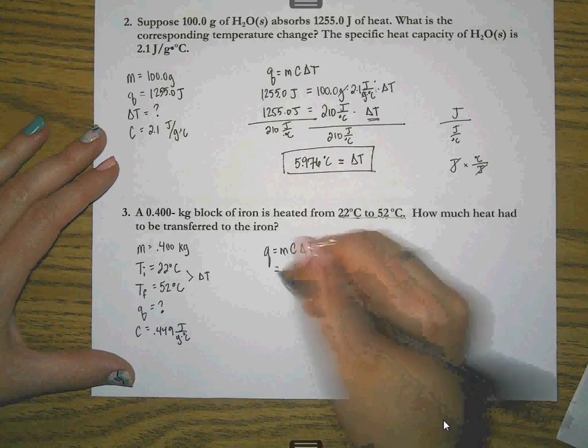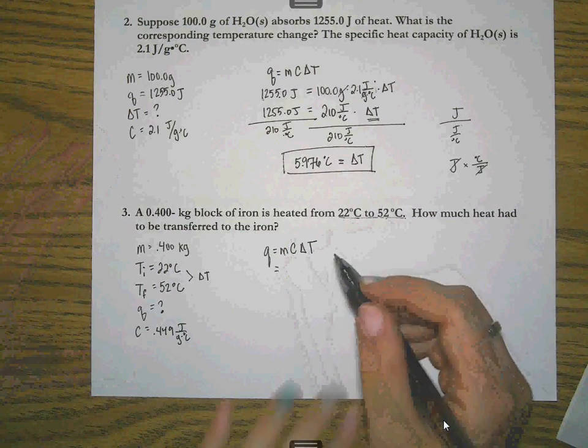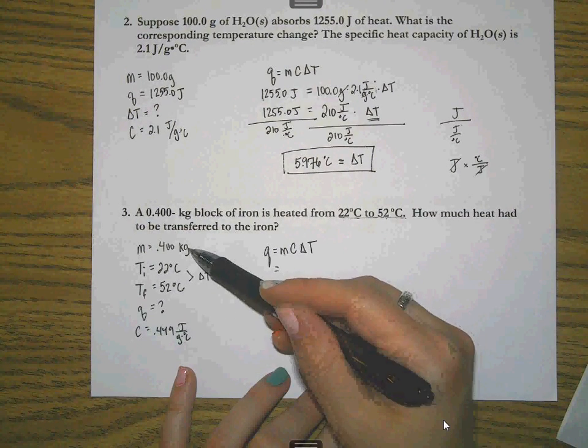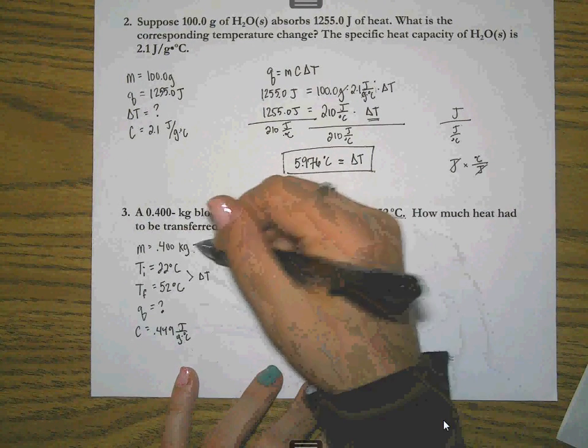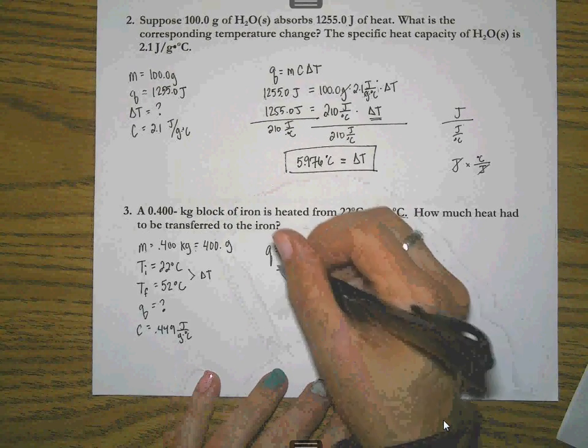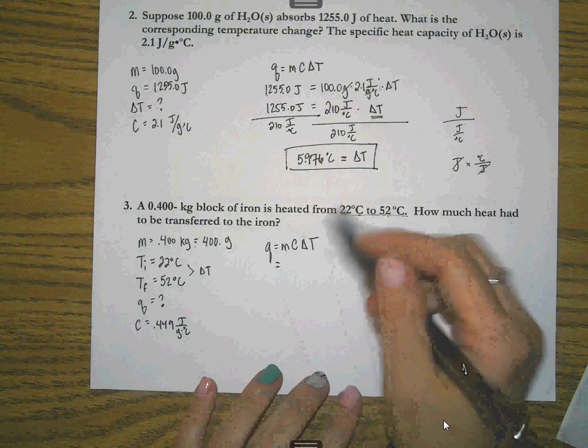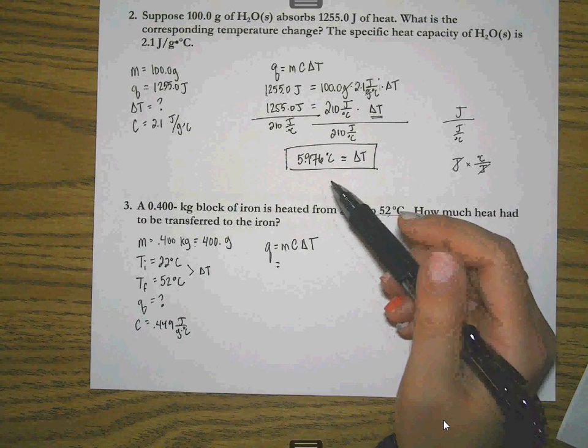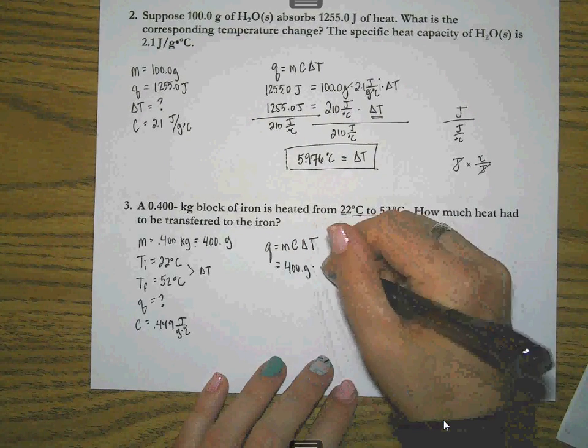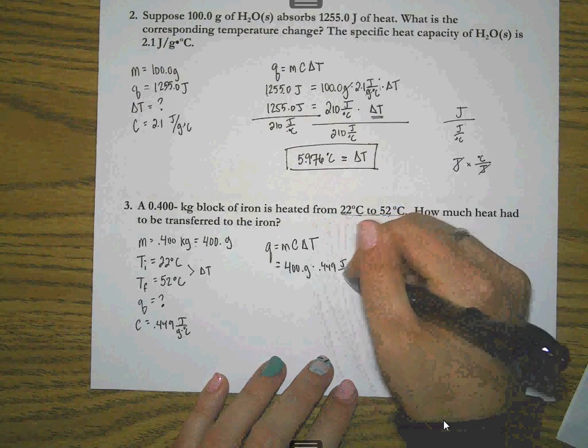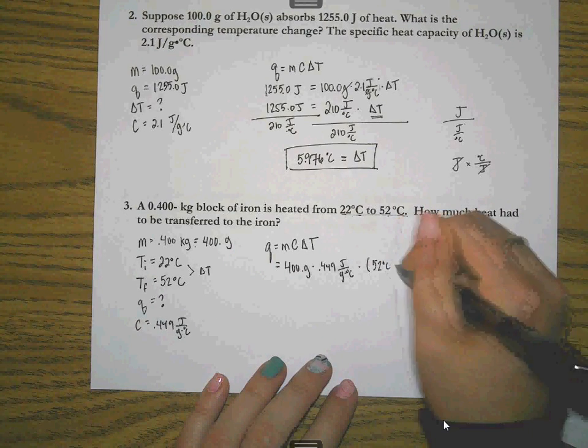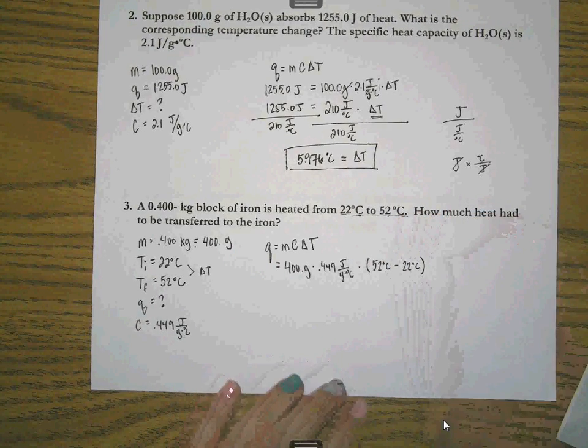So we're going to use that C value, 0.449 joules over grams degree Celsius. So I'm ready to set it up. Q is going to equal—now, if I get ready to put 0.400 kilograms in here, I'm going to have a problem when it comes to canceling out my units because this is kilograms, but this is grams. So I am going to have to convert this and make it 400 grams. One kilogram is a thousand grams. So I've got 400 grams times 0.449 joules over grams degree Celsius times 52 degrees Celsius minus 22 degrees Celsius.